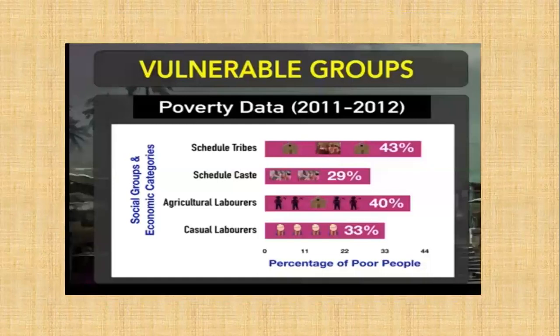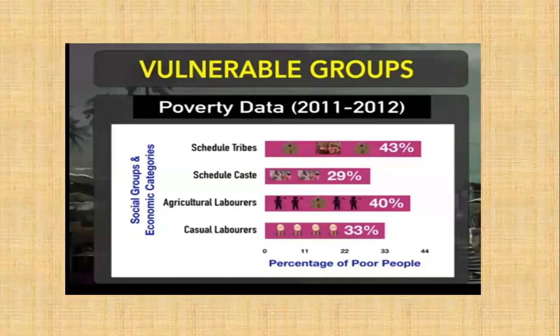Looking at the vulnerable groups' poverty data for 2011 and 2012: 43% of scheduled tribes are poor, 29% of scheduled castes are poor, 40% of agricultural laborers, and 33% of casual laborers are poor. Agricultural laborers are those who work in rural areas and do not possess land. Casual laborers are workers in urban areas working in factories and construction sites.